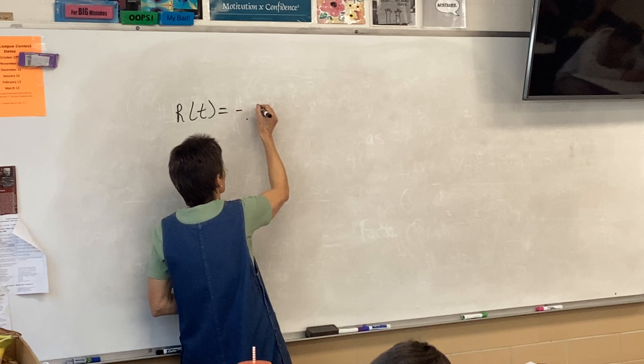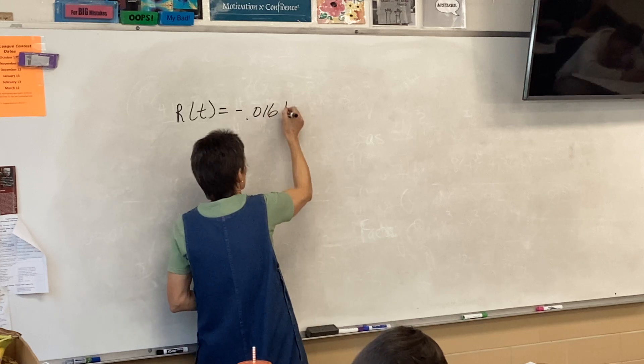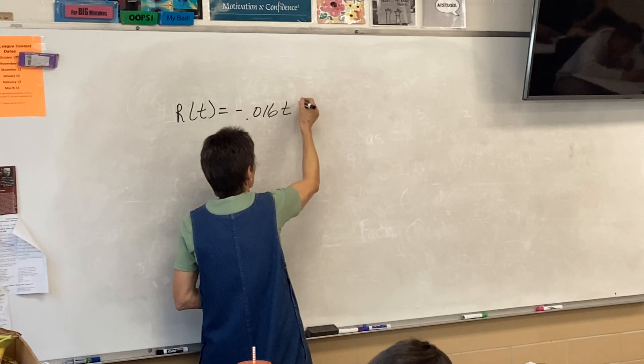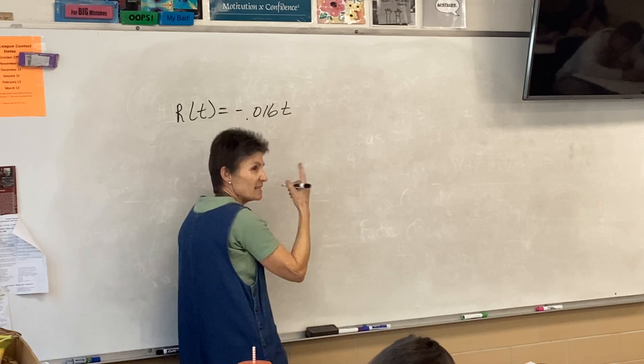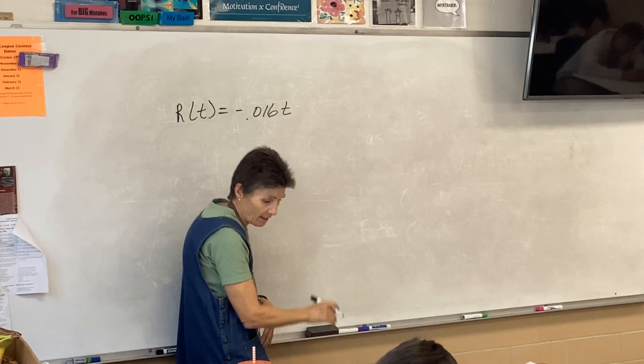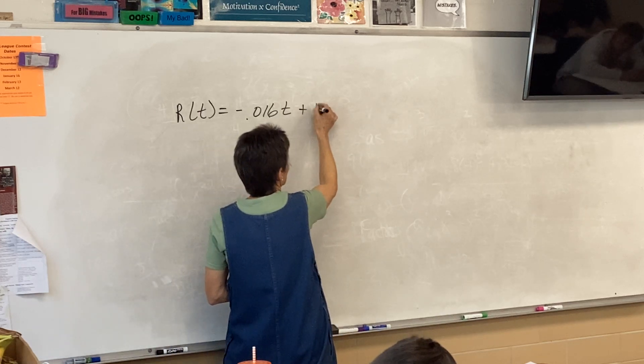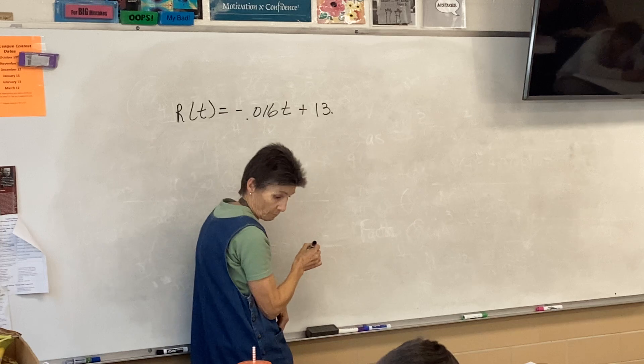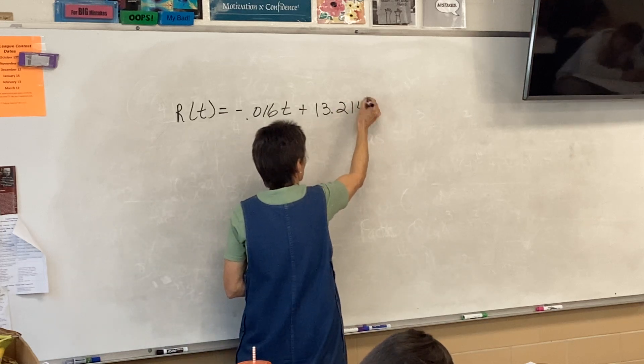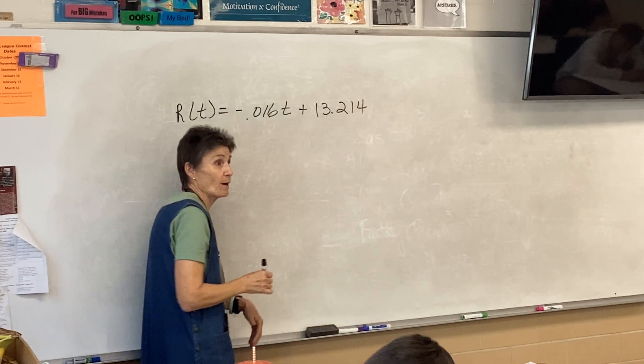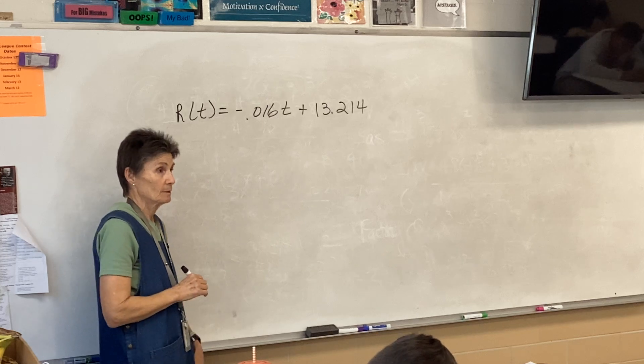Negative 0.016 times T. Okay, I put T, but X is fine, and then plus 13.214, is that right? Yeah, that's right, so I'm sorry, I marked that off. Right, okay there.